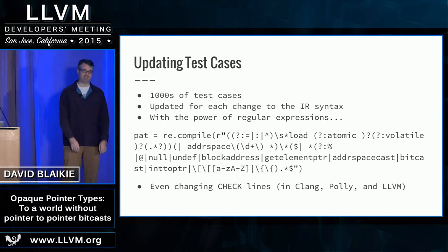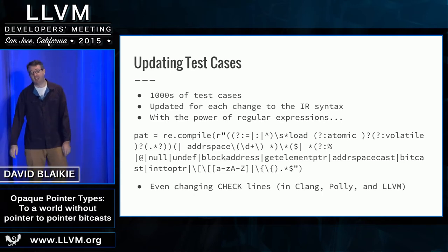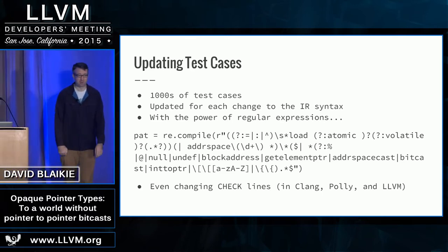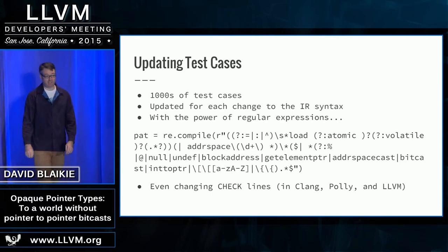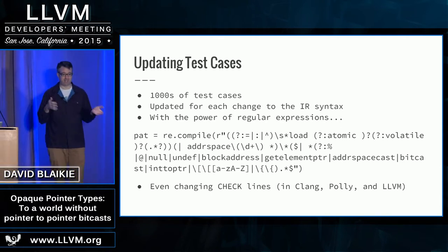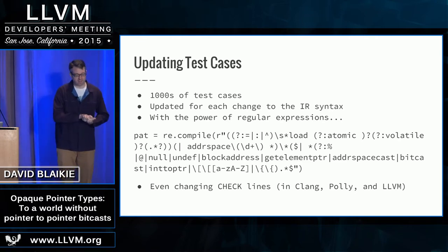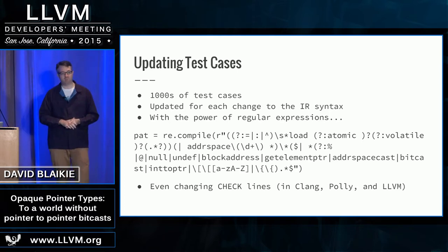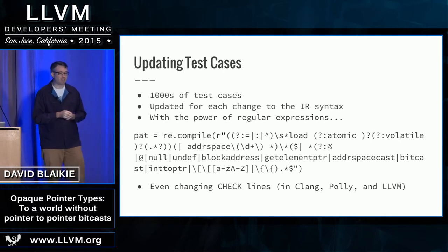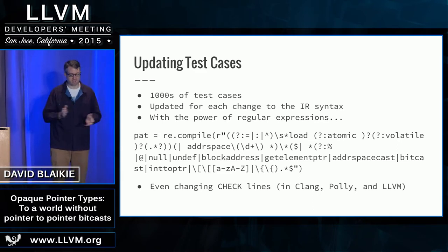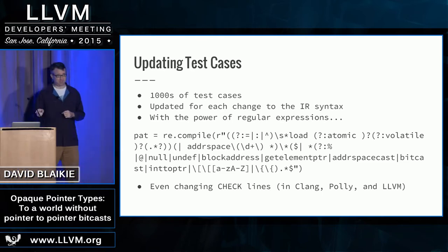As I mentioned, updating test cases. You might have noticed these commits included thousands of changes to tests because the text changed. These commits also included a bunch of Python code and shell scripts. So if you have your out-of-tree tests, you can take that Python code and shell scripts and run it over your tests, even those with check lines. Clang doesn't have checked-in IR, but it has a bunch of IR embedded in checks because it wants to check that it generates the right IR. Most of the transformations I provided will update your check code pretty reliably. I only had to manually update maybe 10 tests and change about five out of tens of thousands.